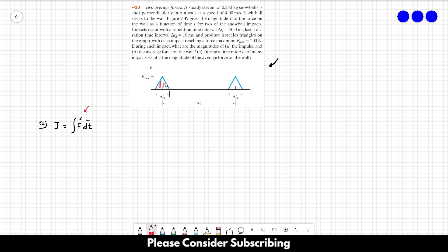So this area over here, we have two different triangles. Actually, we have one triangle. Let's consider just one triangle. So its height is equal to 200 newtons and the width is equal to 10 milliseconds, so 10 to the power of minus 3 seconds.